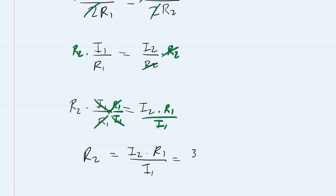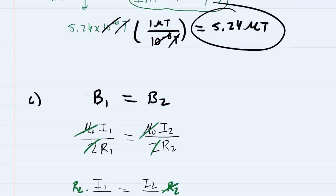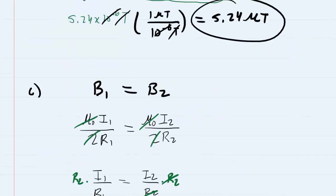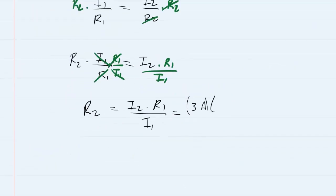Remember that I2 was 3 amps. The radius of the larger loop R1 was fixed at 12 centimeters and then the current flowing through the larger loop was 5 amps. So we punch this in and we should get 7.2 and then the amps would cancel. We have centimeters as our final unit here. So this would be the correct answer to part C.